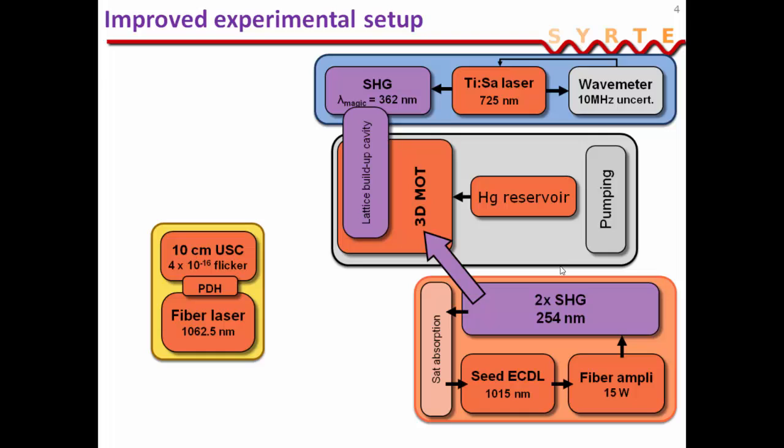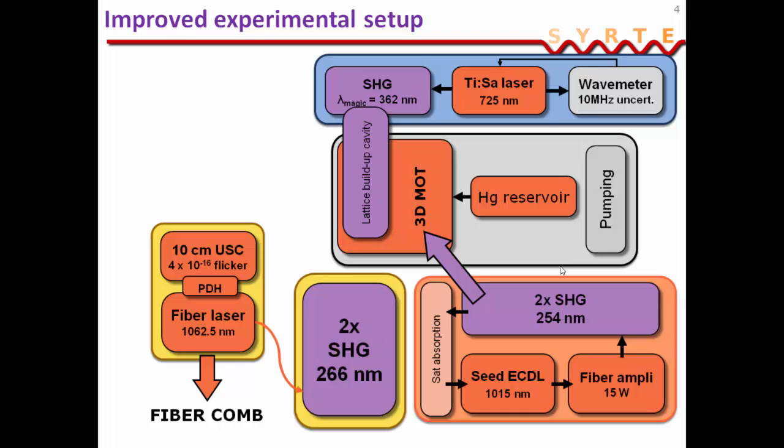And we then have our clock laser setup. So it's a fiber laser, which is locked to a 10 centimeter UV cavity with a flicker floor of 4×10^-16. This is split in two. One part goes to the fiber comb to be counted. And another part goes to the mercury table. It's doubled twice to go to the clock wavelength of 266 nanometers. And we probe the atom vertically in the lattice and detect the fluorescence from the ground state.